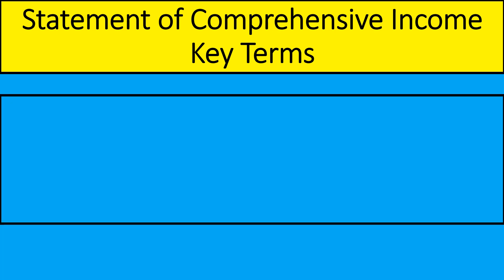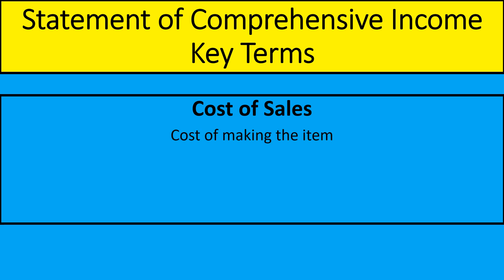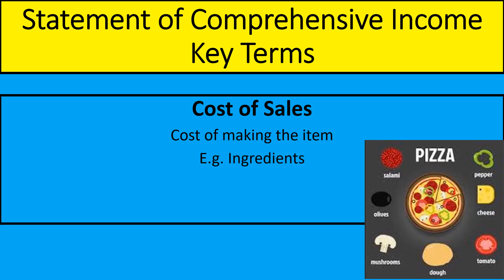The second term is cost of sales. This is the cost of making the item, very similar to the variable cost in breakeven. So in a pizza making place, it would be the ingredients and the pizza boxes — things like the mushrooms, the dough and the tomatoes. The cost of sales is the cost of making an item.